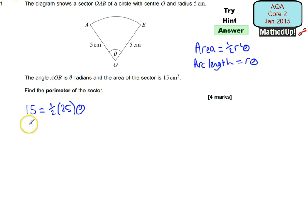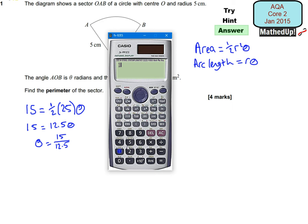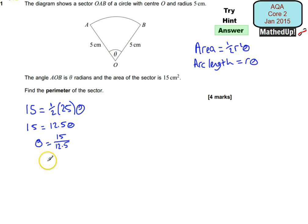That means that 15 is going to equal 12.5 theta, or theta is going to equal 15 divided by 12.5. Using my calculator, 15 divided by 12.5 equals 6 fifths or 1.2. So theta equals 1.2, which is how many radians this angle is.